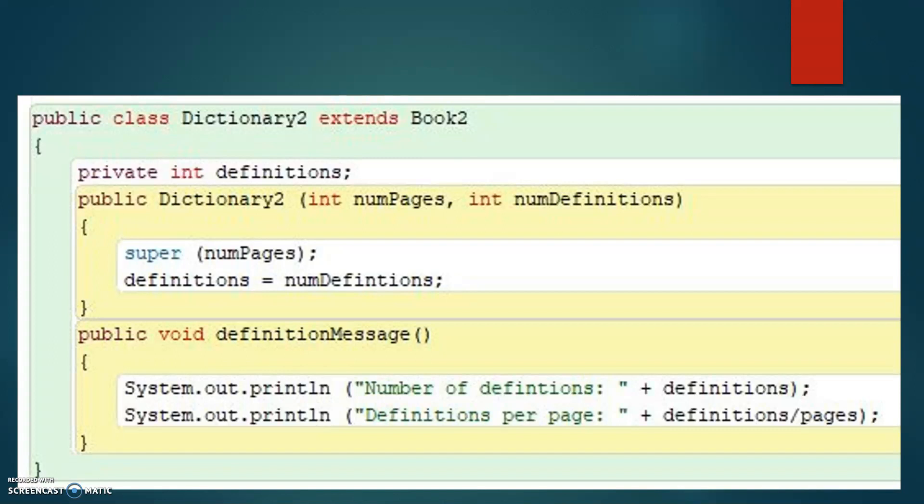If we do this, the super reference must be the first line of the constructor. The super reference can also be used to reference other variables and methods defined in the parent's class.